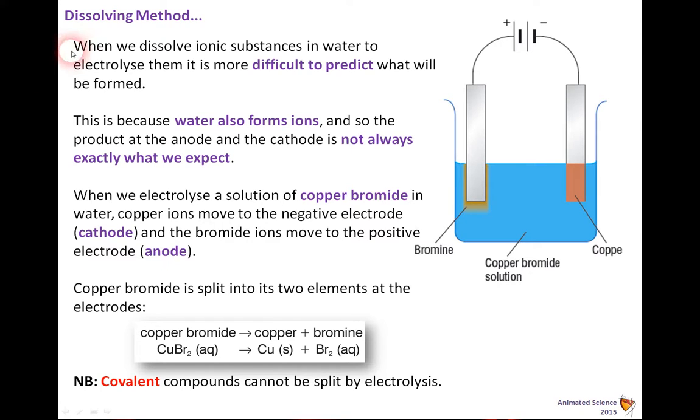Simply put then, the dissolving method is a little bit more difficult to predict what will be formed. This is because water also forms ions, which we've seen before, H+ and OH- ions. So the product at the anode and the cathode is not always exactly what we might expect, unless we consider the water as well. When we electrolyse a solution of copper bromide in water, copper ions move to the negative electrode, the cathode, and the bromide ions move to the positive electrode or anode. The copper bromide is split into two elements at the electrodes, so we've got copper bromide, CuBr2 aqueous, goes to copper plus bromine, Cu plus Br2. Note, covalent compounds cannot be split by electrolysis, it must be ionic.